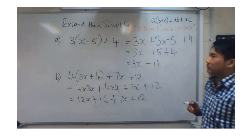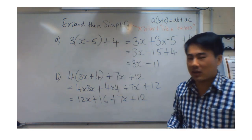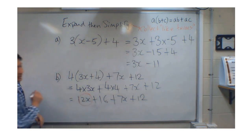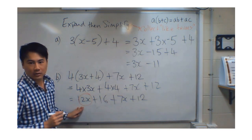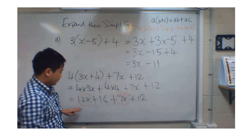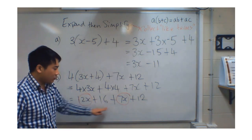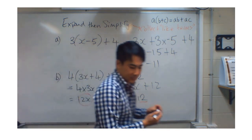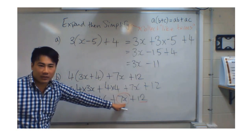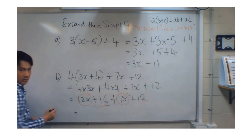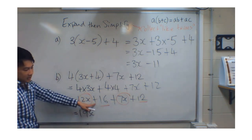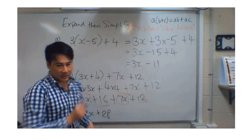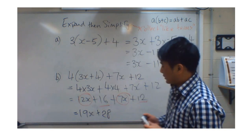Now simplifying: collect like terms, grouping similar items together. I've got 12x — what's similar? 7x. I can add those together: 12 lots of x plus 7 lots of x gives 19x. Then 16 is similar to 12 — both just numbers. 16 plus 12 gives 28. So the answer is 19x plus 28.